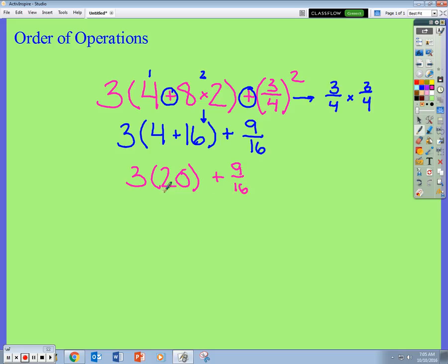I have multiplication and addition. And I have two terms still. This side is a term. This side is a term. I'm going to evaluate this side of the numeric expression first because we have multiplication. And multiplication comes before addition. 3 times 20 will give you 60 plus 9 sixteenths.